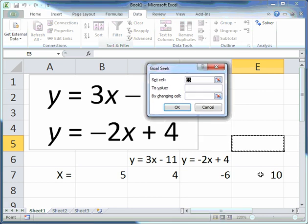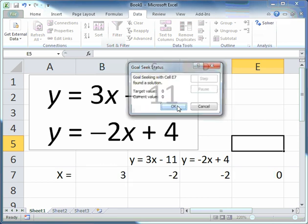I'm going to set the cell E7 to 0 because the two values of y for the equations really should be the same, and their difference should be 0. And I'll achieve that by changing the value in cell B7, which is the value of x. I'll click on OK.